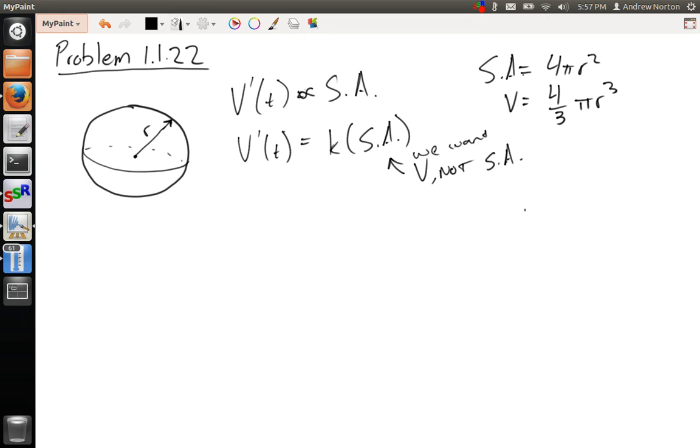So then, we can actually solve this equation. We can solve our V equation for r, and we get r³ is equal to 3V over 4π.